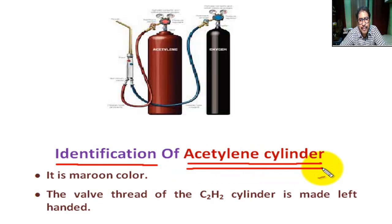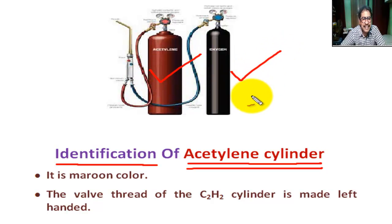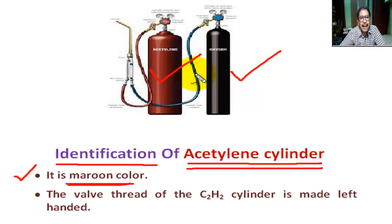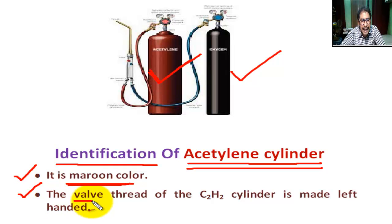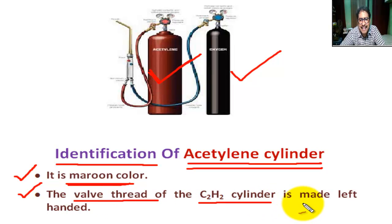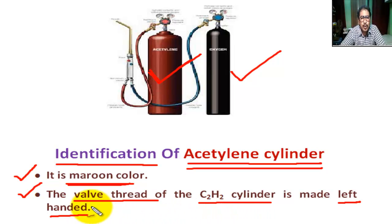Next, what is the method of identification of the acetylene cylinder? This is the acetylene cylinder. The colour of the acetylene cylinder is maroon. The bulb head of the acetylene cylinder is made left-handed — left-hand threads are used in the acetylene valve.